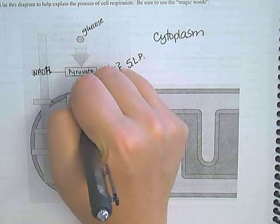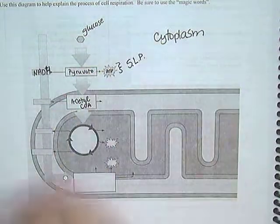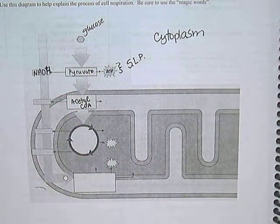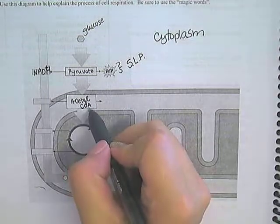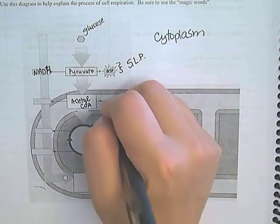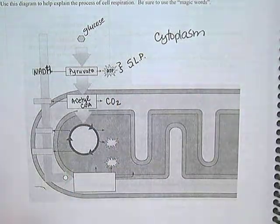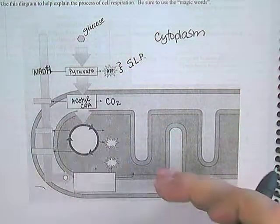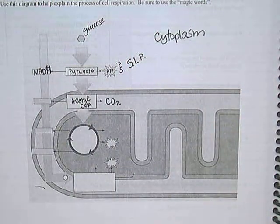This is going to then get converted into a molecule called acetyl-CoA. We're not showing the enzymes or any of the additional steps, we're just simplifying it. Acetyl-CoA is a two carbon molecule which means we are going to give off carbon dioxide.